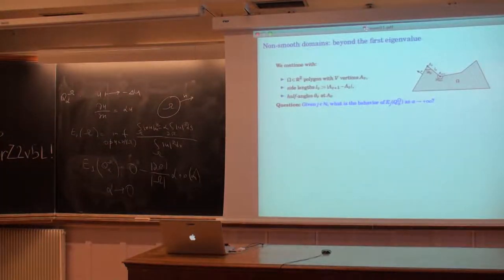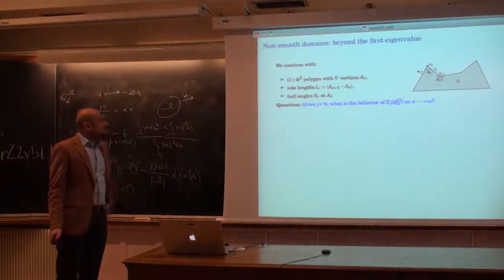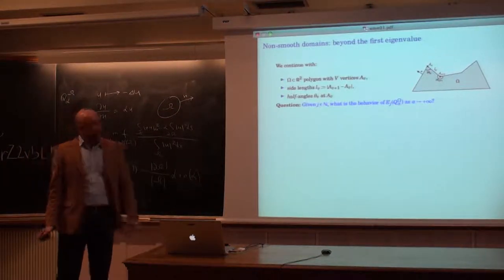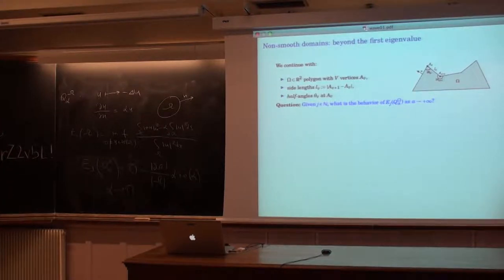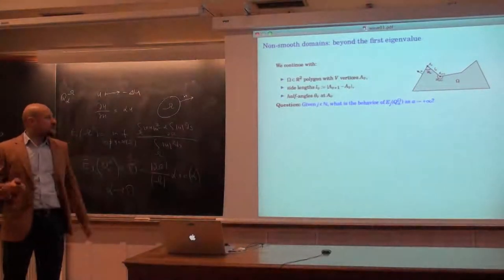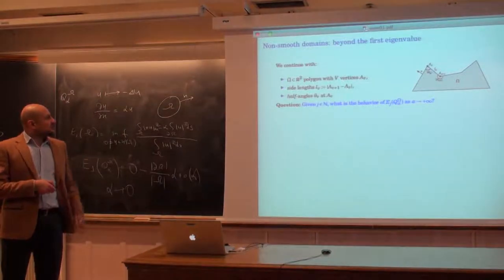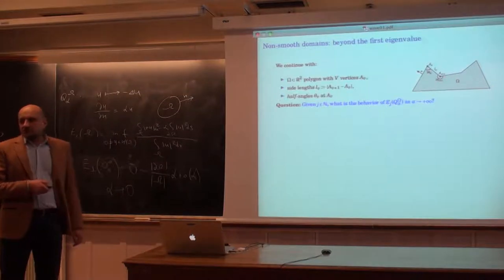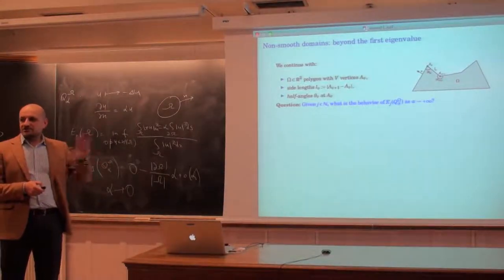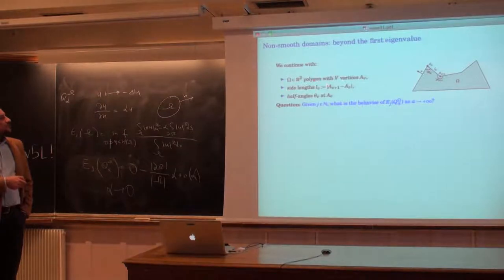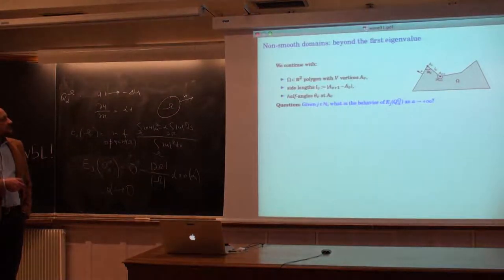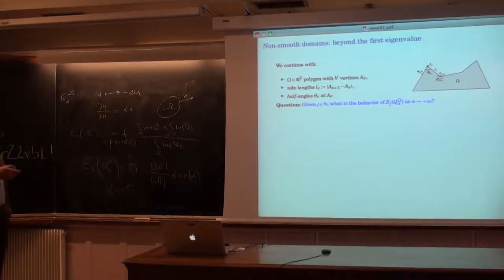Now back to the main topic, which was asymptotics. I would like to understand how far we can go for non-smooth domains. I will continue with two-dimensional domains and essentially just polygons — to avoid all curvature effects, which are already sufficiently difficult. I will assume I have a polygon with V vertices A_v, and in this setting it is more reasonable to work with half-angles instead of angles. The question is: if I fix a number j, can I describe the asymptotic behavior of the j-th eigenvalue of the Robin Laplacian?